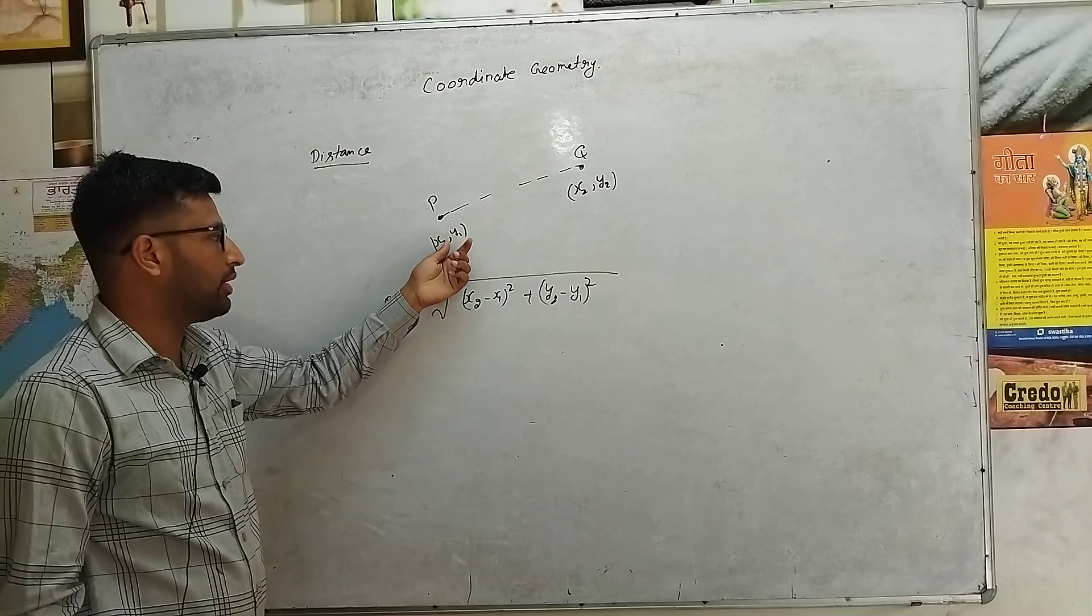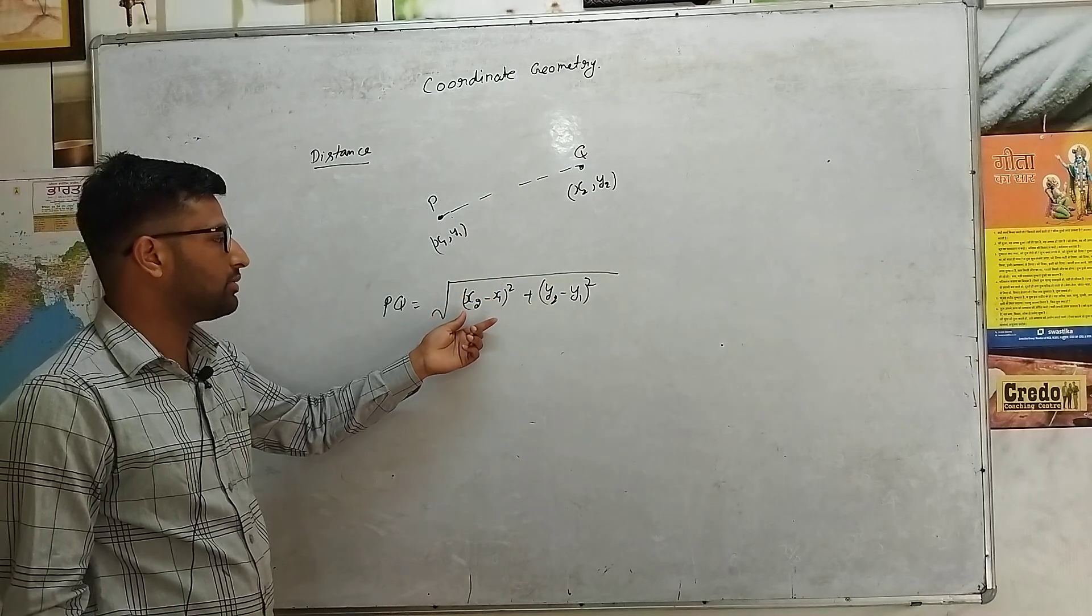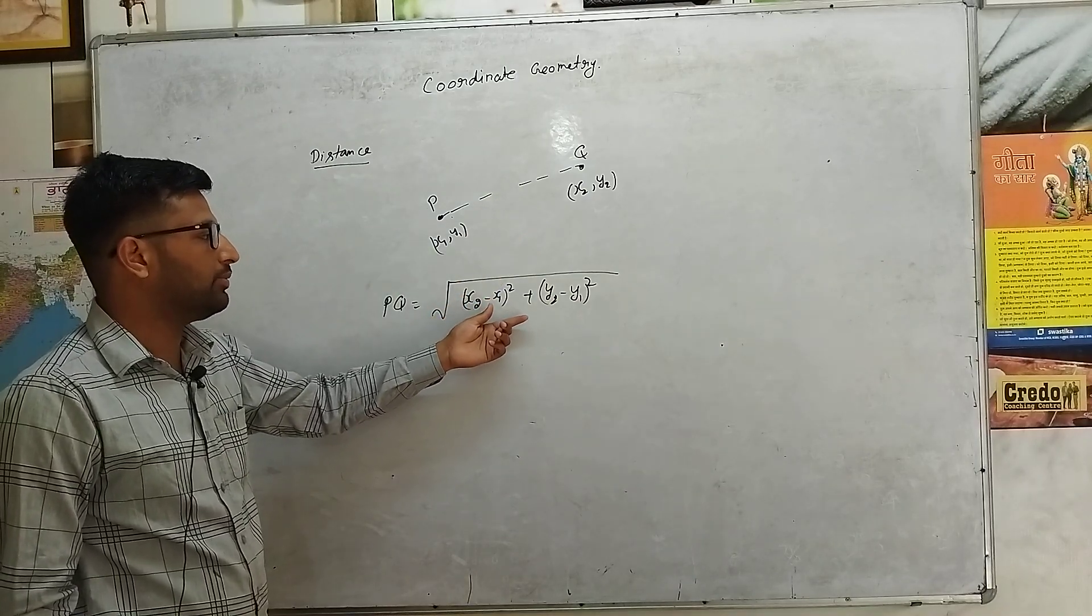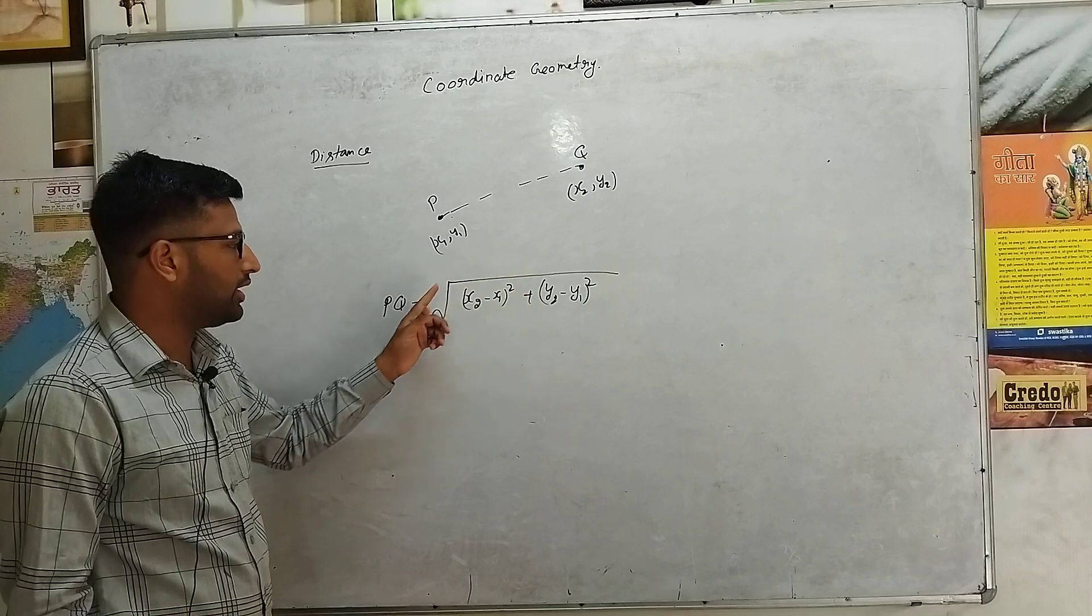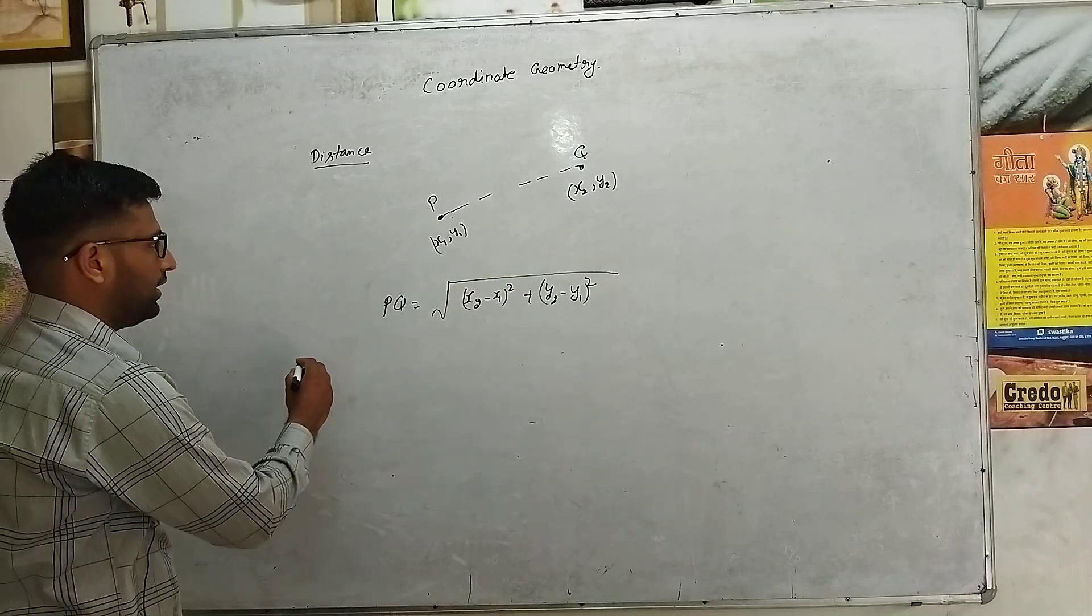P is equal to x1, y1. Q is x2, y2. The formula is x2 minus x1 square plus y2 minus y1 square. It is in square root. As we see here in the example, we will follow the distance formula.